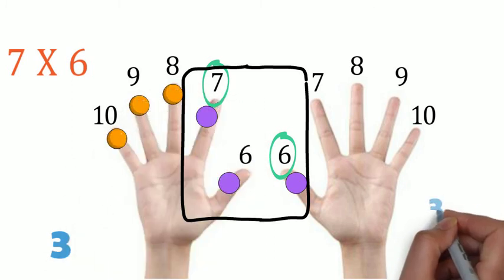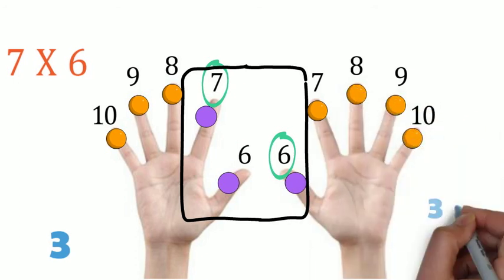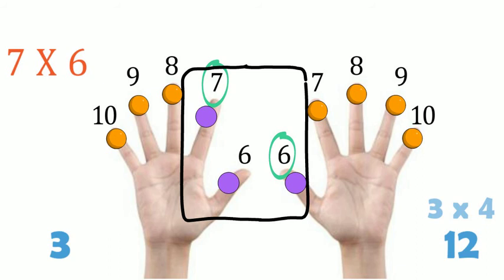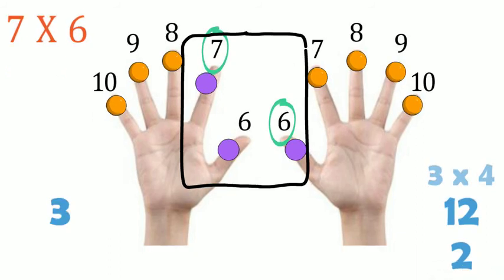Let's count the fingers on the left. There are three. And the fingers on the right, there are four. So three times four is twelve. Because twelve is more than nine, we leave the two and carry the one to the earlier number three and add it together. Now it became four. We are done. The answer is 42.